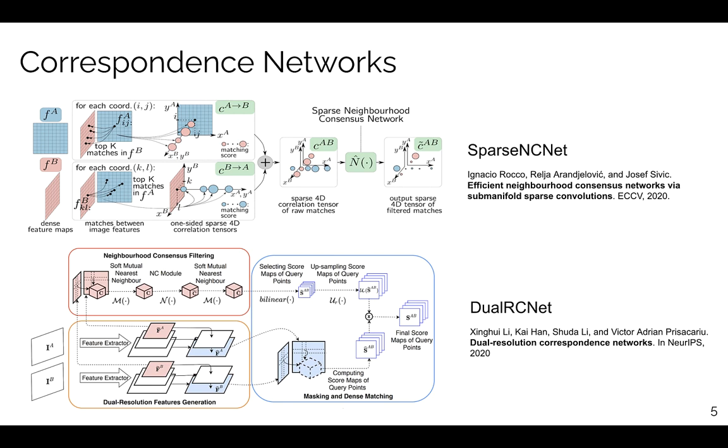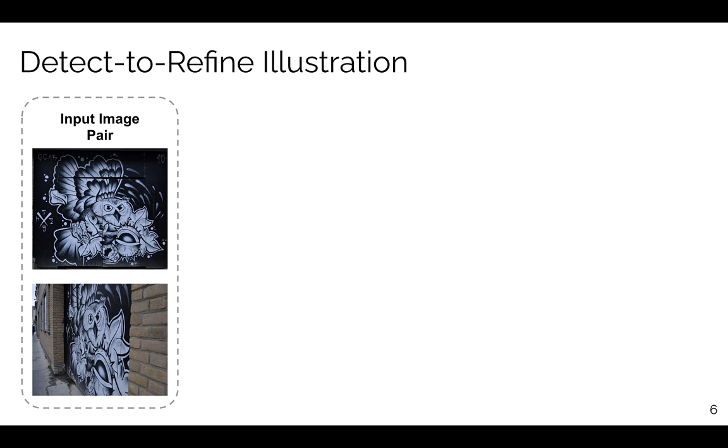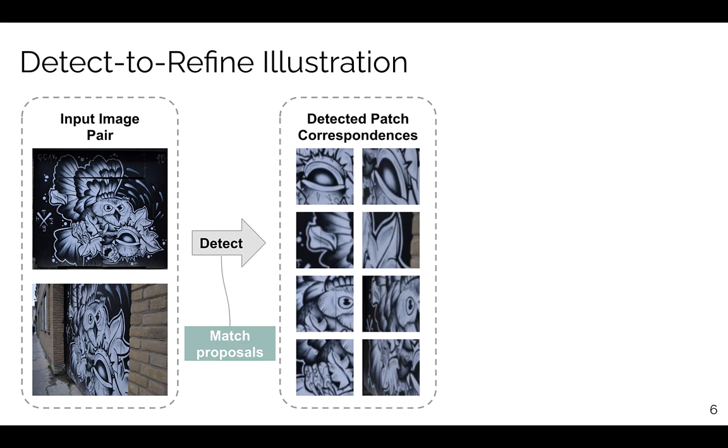Compared to them, we use our regression-based refinement network to improve the matching accuracy. We propose our detect-to-refine matching framework inspired by Faster R-CNN. We first detect patch-level match proposals and then refine them to pixel-level matches.